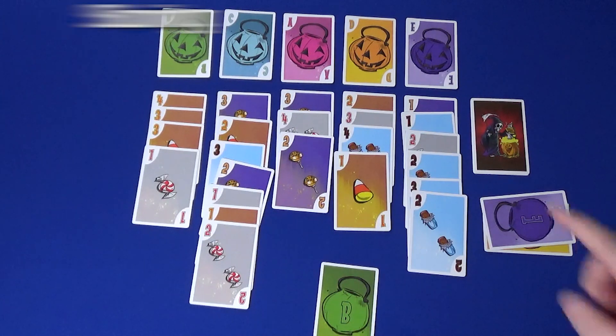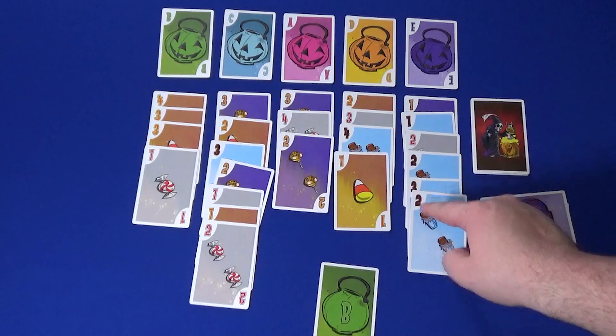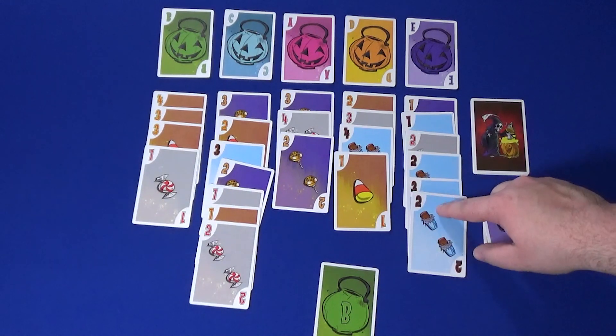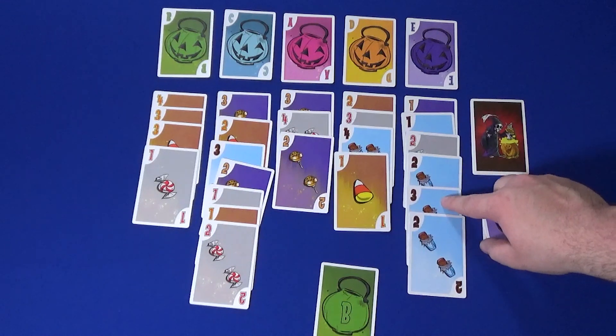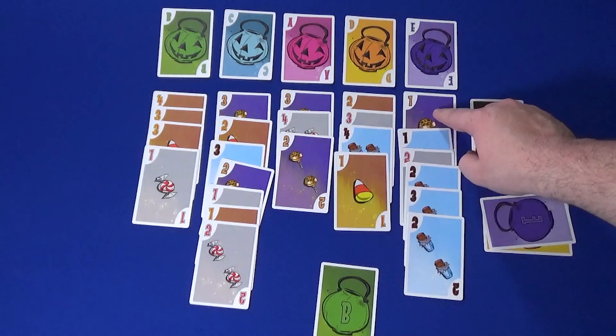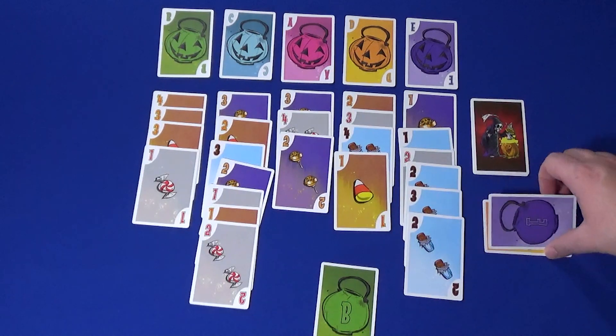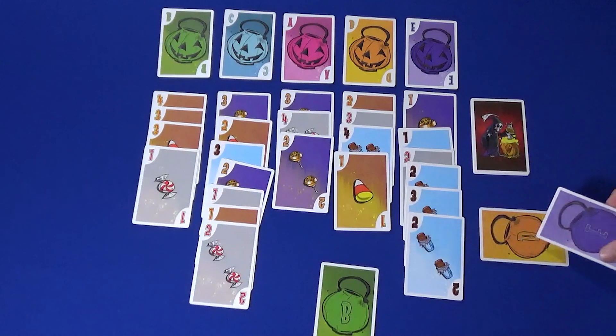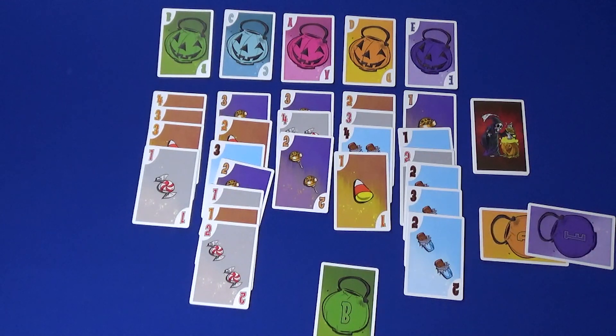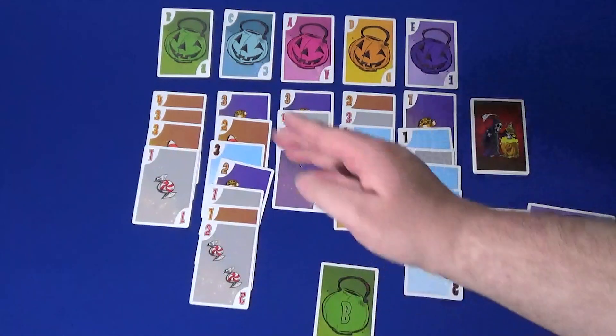You will score one point for each candy on the cards that are in your basket. For example, I would get two points for this chocolate, three points for this chocolate, two points for this mint, one point for this lollipop. You also get four points for each other player's secret letter that you got. Whoever has the most points is the winner. In the case of a tie, the tied players are eliminated and the player with the highest non-tied amount of candy wins.